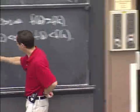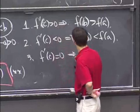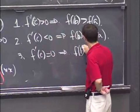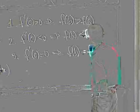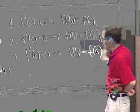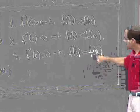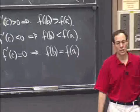And finally, if f prime of c is 0, then f of b is equal to f of a. Which if you apply it to all possible ends, means if you can do it for every interval, which you can, then that means that f is constant. It never gets to change values.